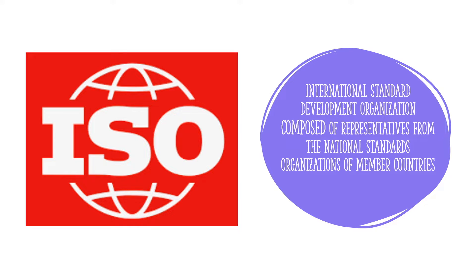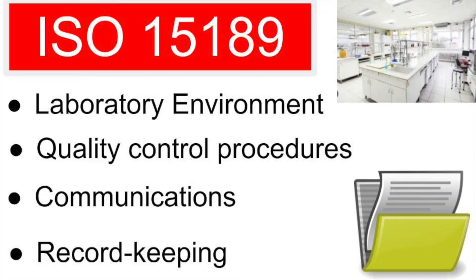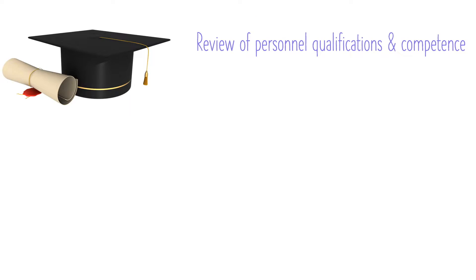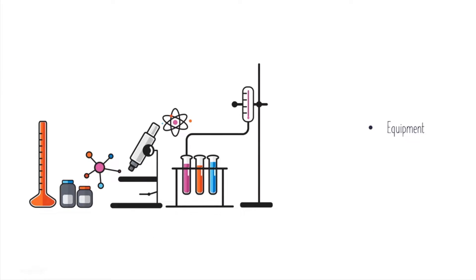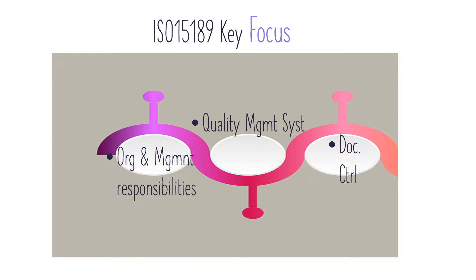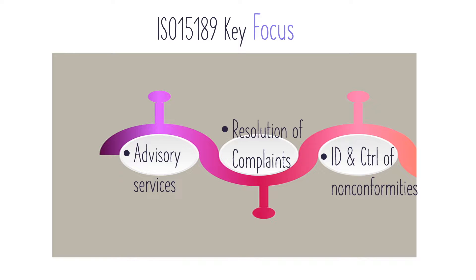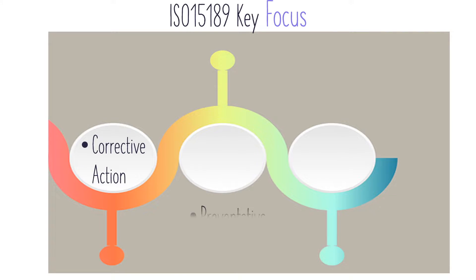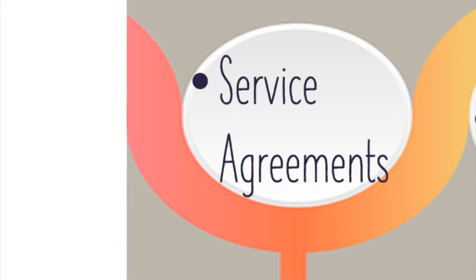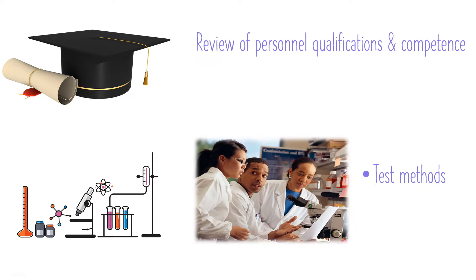There are many factors that must be addressed to assure quality in the laboratory. According to ISO, there are 12 essentials needed to ensure excellent performance. These go from organization, personnel, equipment, purchasing and inventory, process control, information management, documents and records, occurrence management — when things happen that shouldn't have, you must respond to ensure they don't recur — assessments, process improvement, customer service, and facilities and safety.